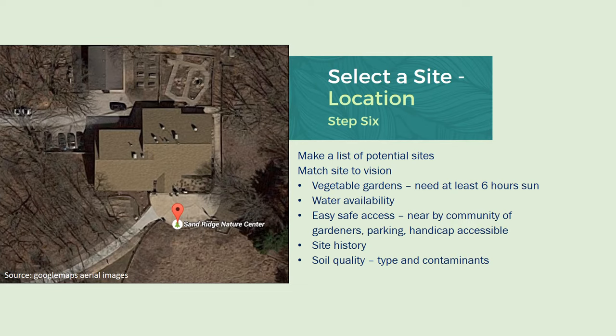Selecting a site — this is really key. You'll want good quality soil and full sun for a vegetable garden; you'll need at least six hours of sun. Water is another top priority — easy, safe access to water. Also, accessing the site for community members should be easy. Is there parking? Is there handicap accessibility? Consider those before selecting your site.